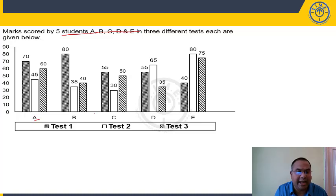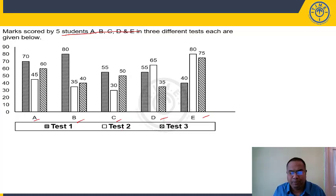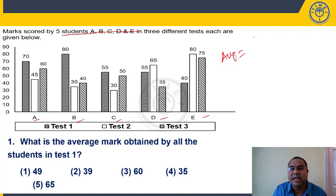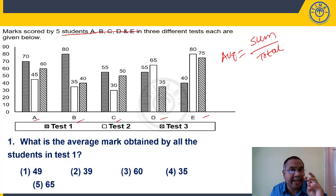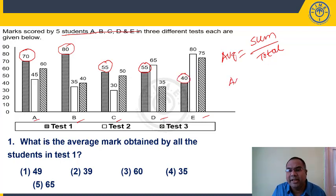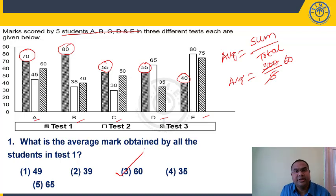Question 1: What is the average mark obtained by all students in test one? Average = sum of all quantities divided by total number of quantities. Test one marks: A = 70, B = 80, C = 55, D = 110 (approx), E = 40 — wait, reading test one bars: 70 + 80 = 150, plus 55 = 205 (roughly), plus E = 40, total = 300. Average = 300 ÷ 5 = 60. Answer: choice 3.